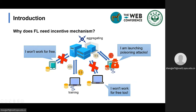For the task requester, even if he pays the participants, the participants may submit bad models to improve their utilities. Besides, the task requester is not aware of the amount and quality of data for each participant. If a data poisoning attack is conducted or the data quality is poor, the performance of the global model may become worse. Therefore, an incentive mechanism is necessary.